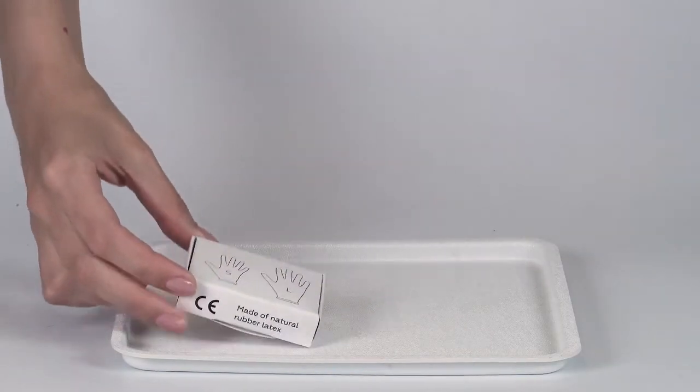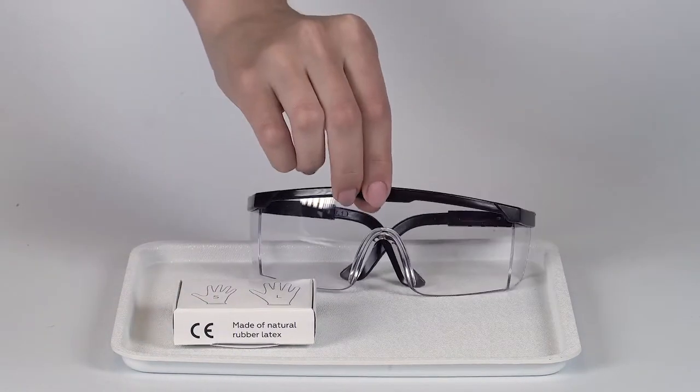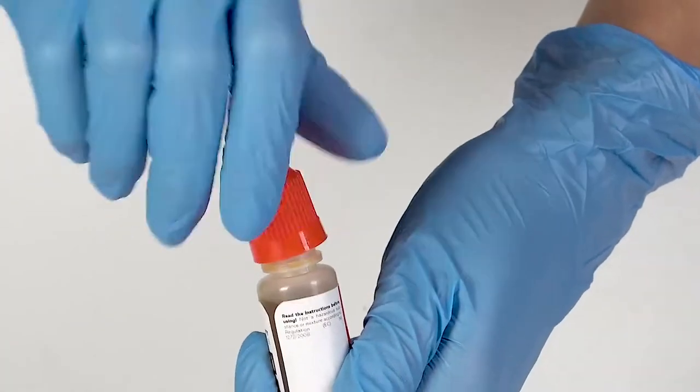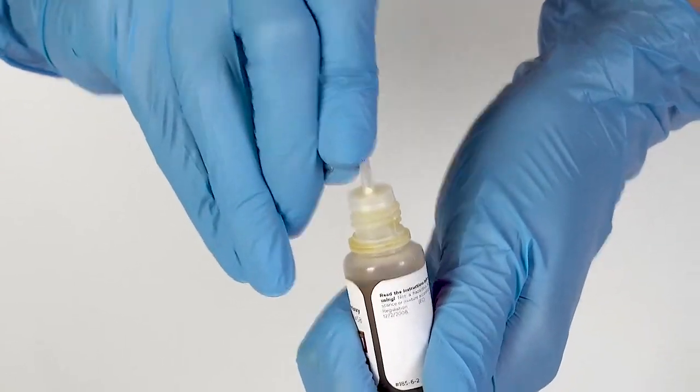Perform this experiment on a plastic tray to contain any possible spills. Don't forget to put on protective gloves and goggles before doing the experiment. To open a bottle containing a reagent, push the cap down and turn it. Pierce the bottle nozzle with an unbent paper clip.